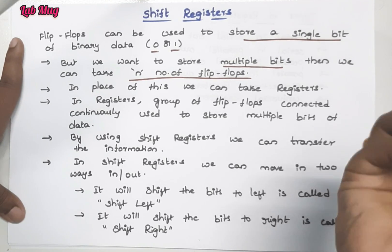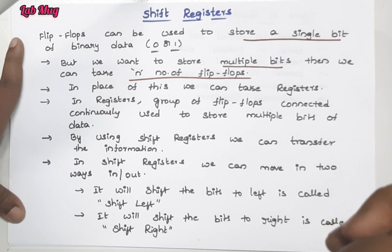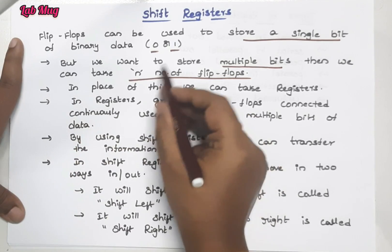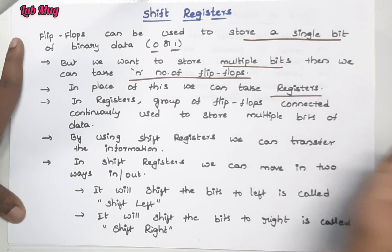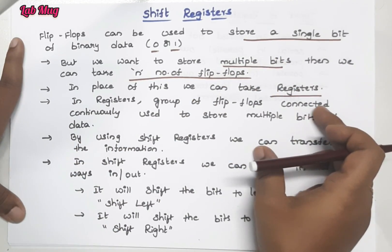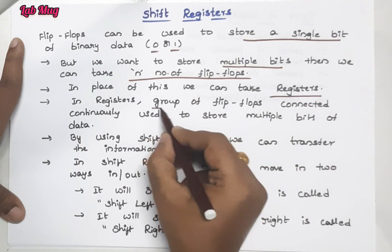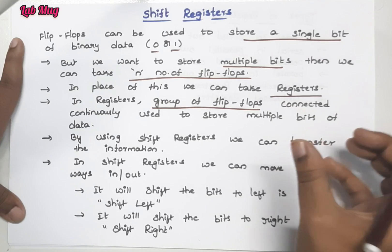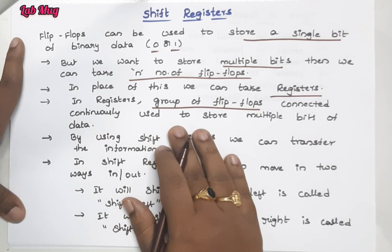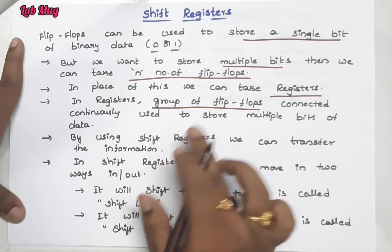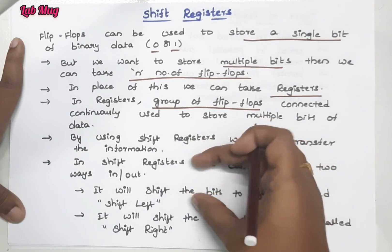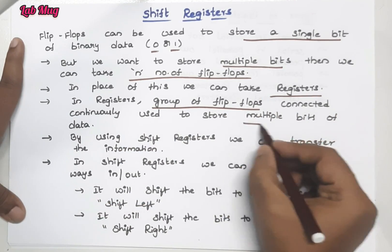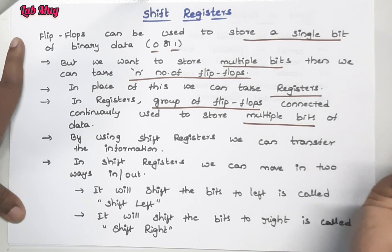Instead of increasing the number of flip-flops individually, we use the concept of a register to store bulk data. A register is a collection of flip-flops used as a single storage unit. In registers, a group of flip-flops are connected one by one continuously, so that one flip-flop is connected to another flip-flop.